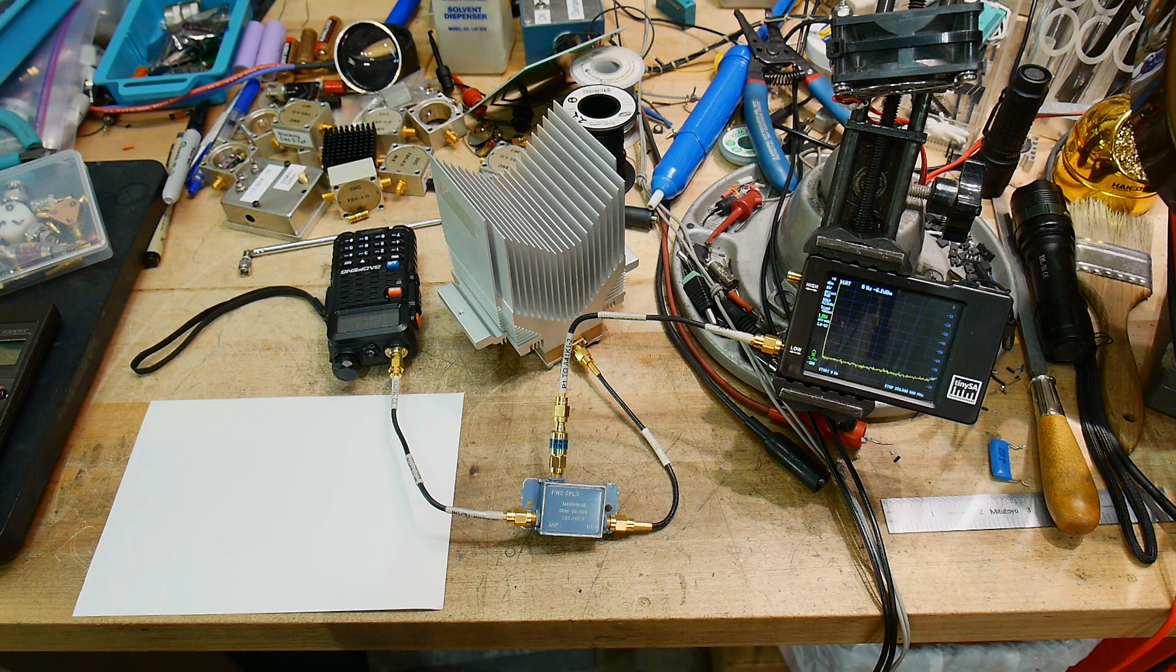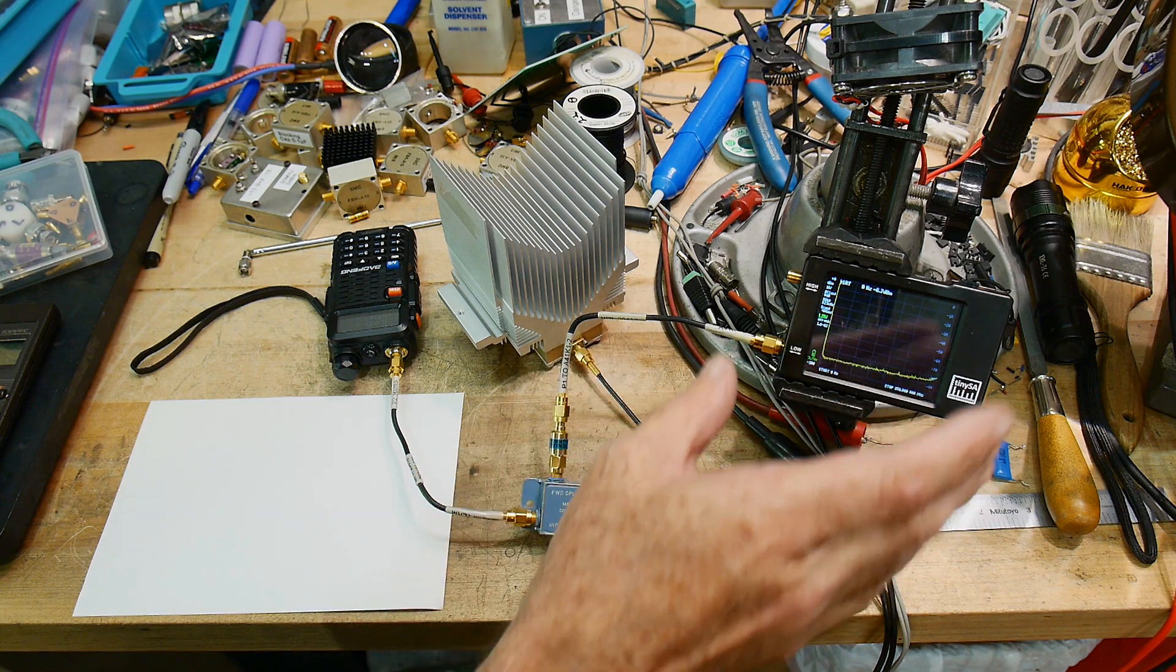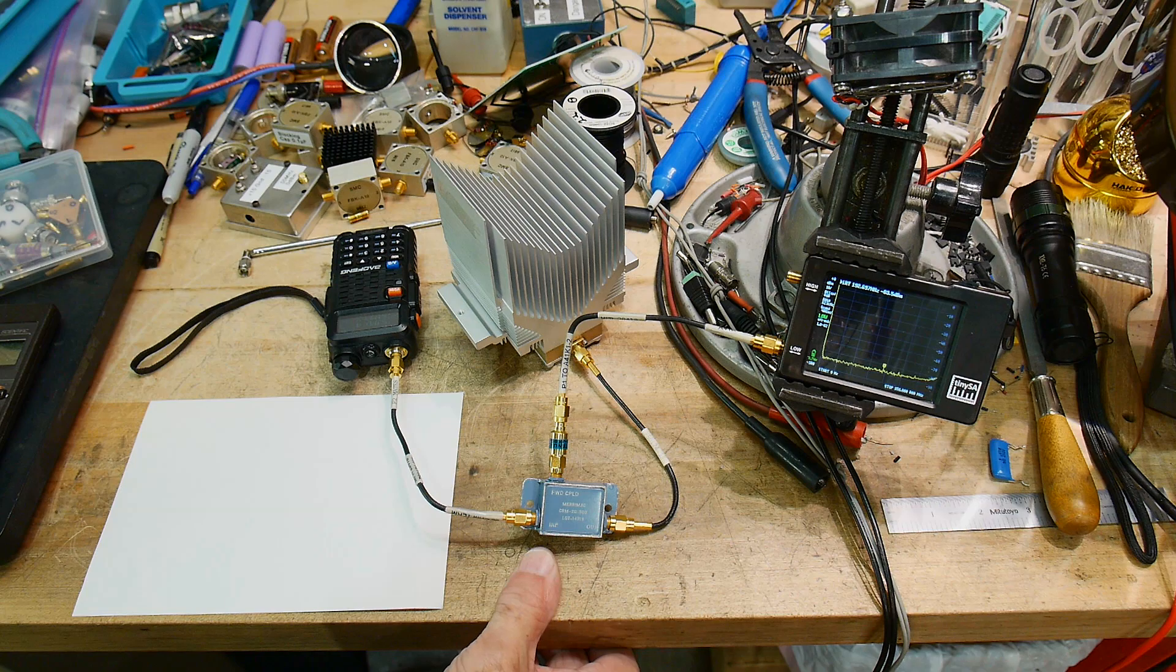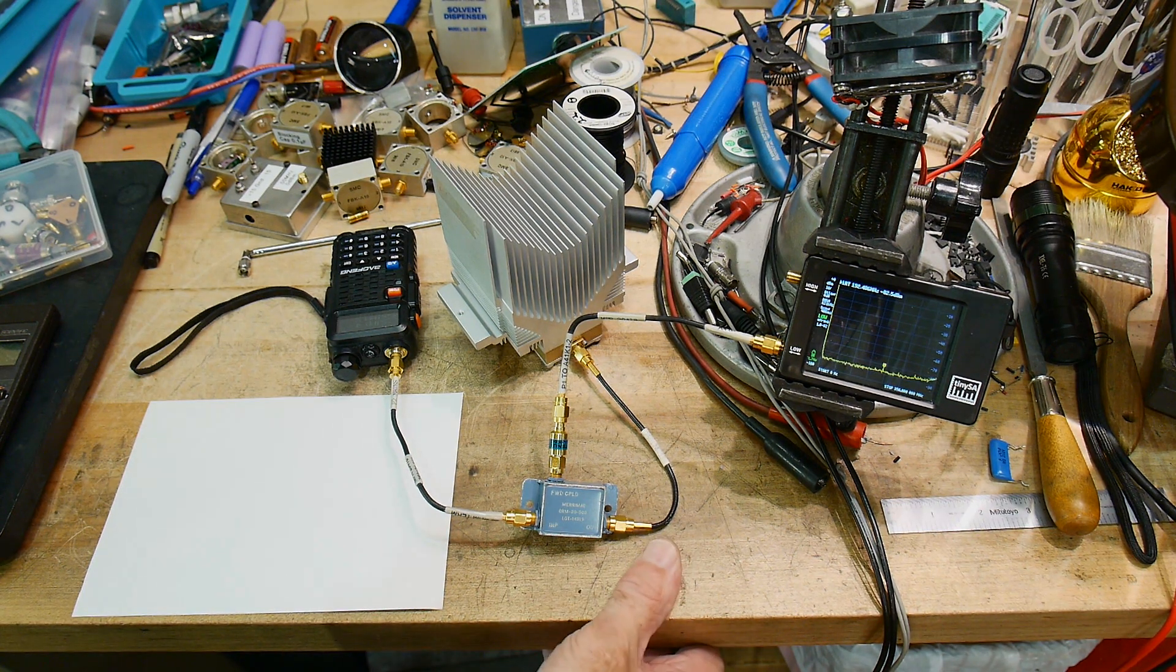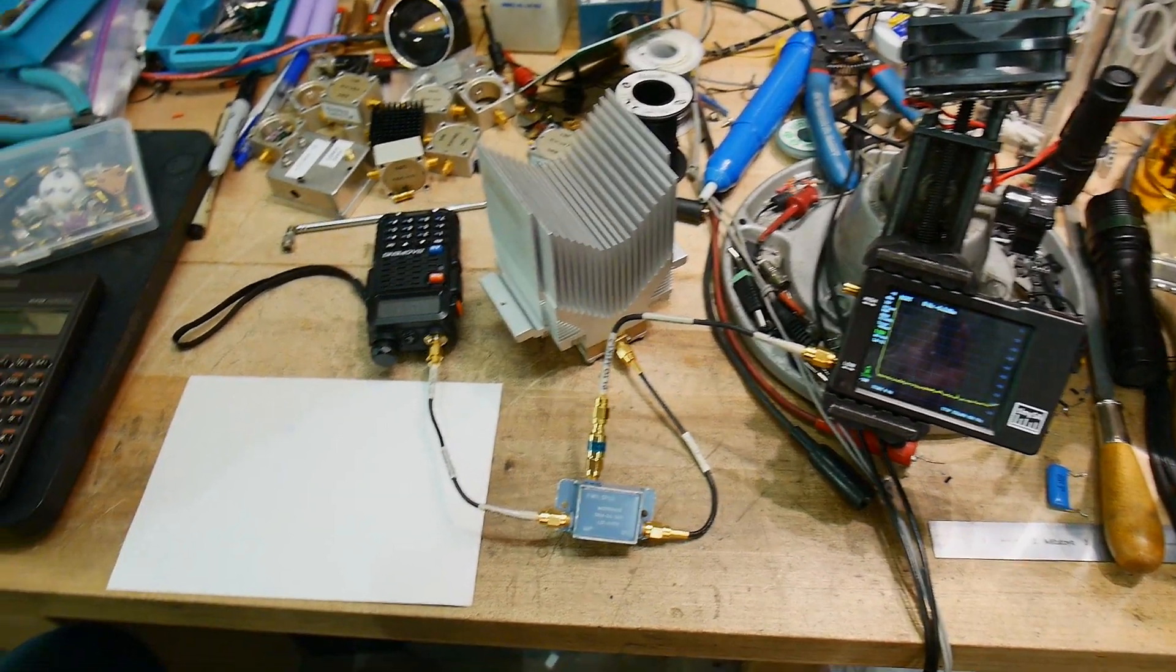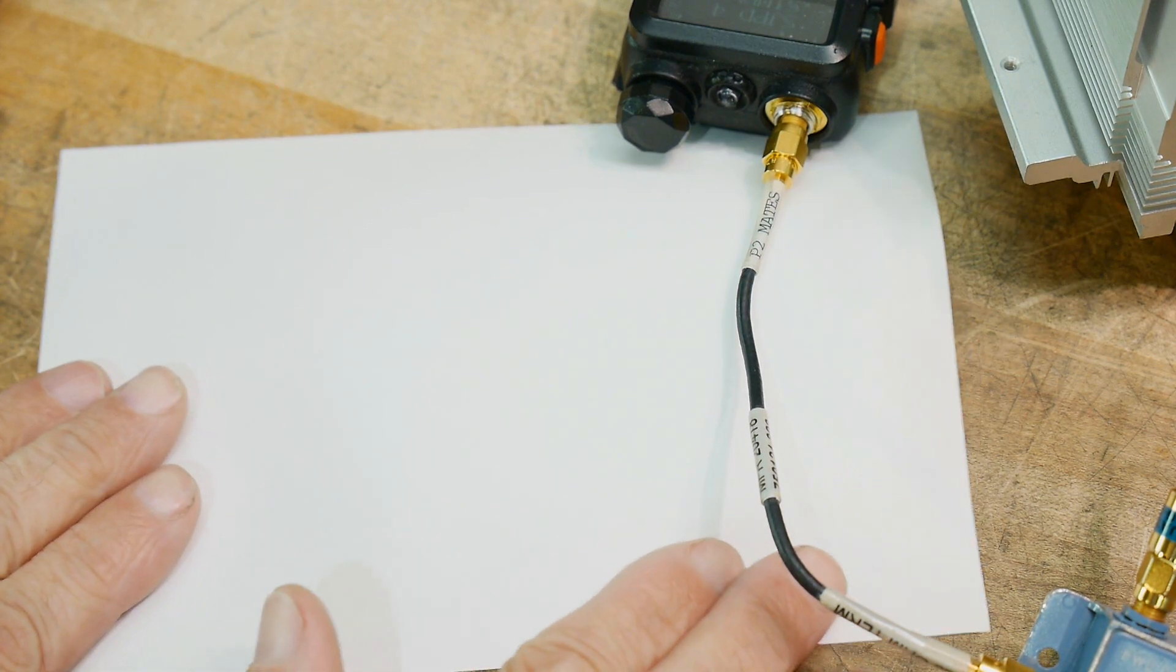A viewer asked me to do a measurement setup using the TinySA and a coupler. So how would you do that? And what are couplers? I did have a video on couplers, but let me just briefly describe them.